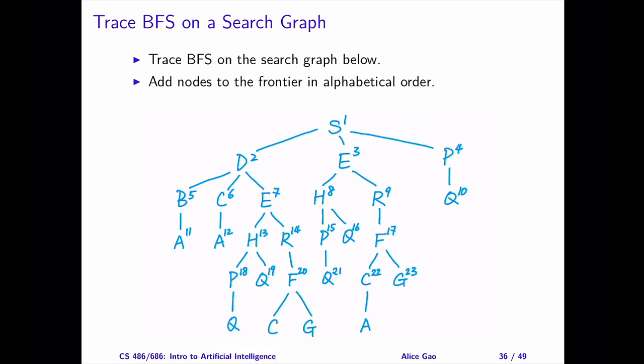BFS explores the search tree level by level. When BFS terminates, we found the shallowest goal node in the search tree. In other words, the path we found has the fewest edges to any goal node among all possible solutions.